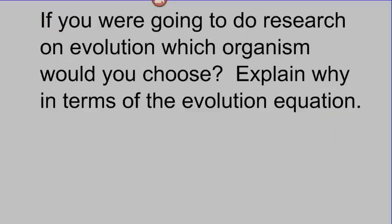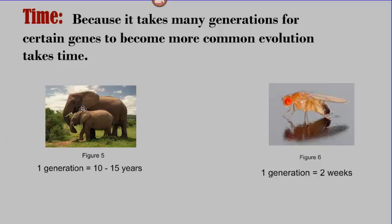So here's a challenge question. If you were going to do research on evolution, which organism would you choose? And tell me why in terms of the evolution equation. Okay, so see if you can use the key components of the evolution equation, along with what I just discussed about the last component, and propose why it would be better to do evolutionary research on elephants, as compared to doing evolutionary research on fruit flies.